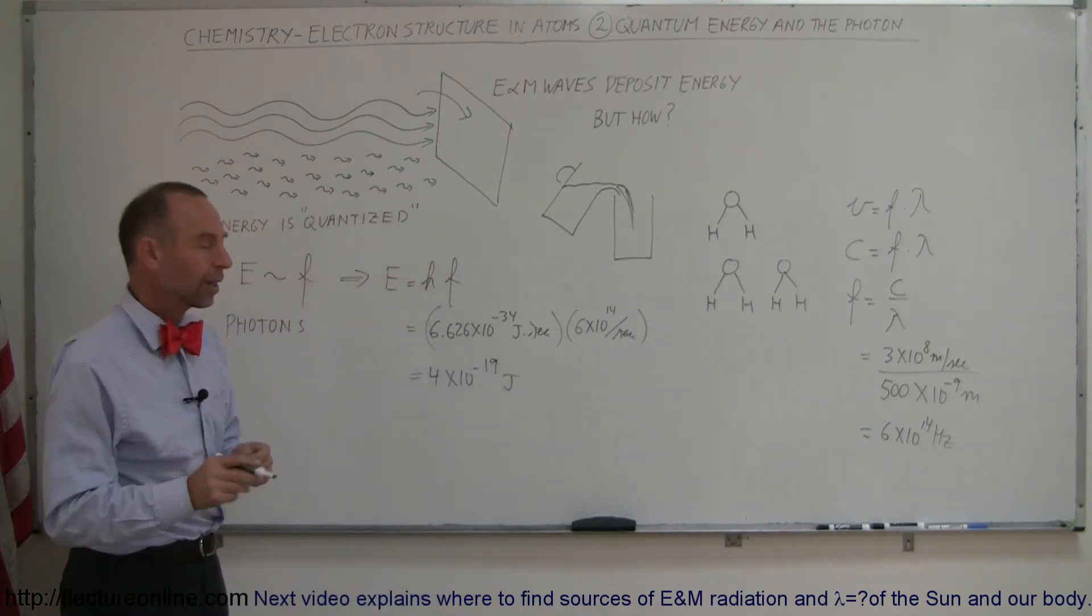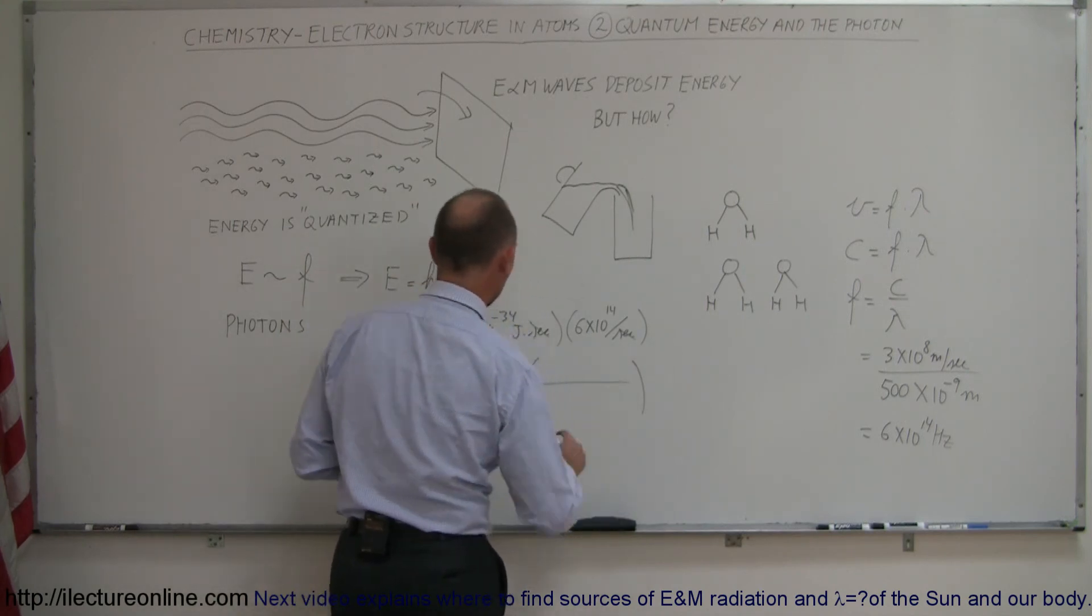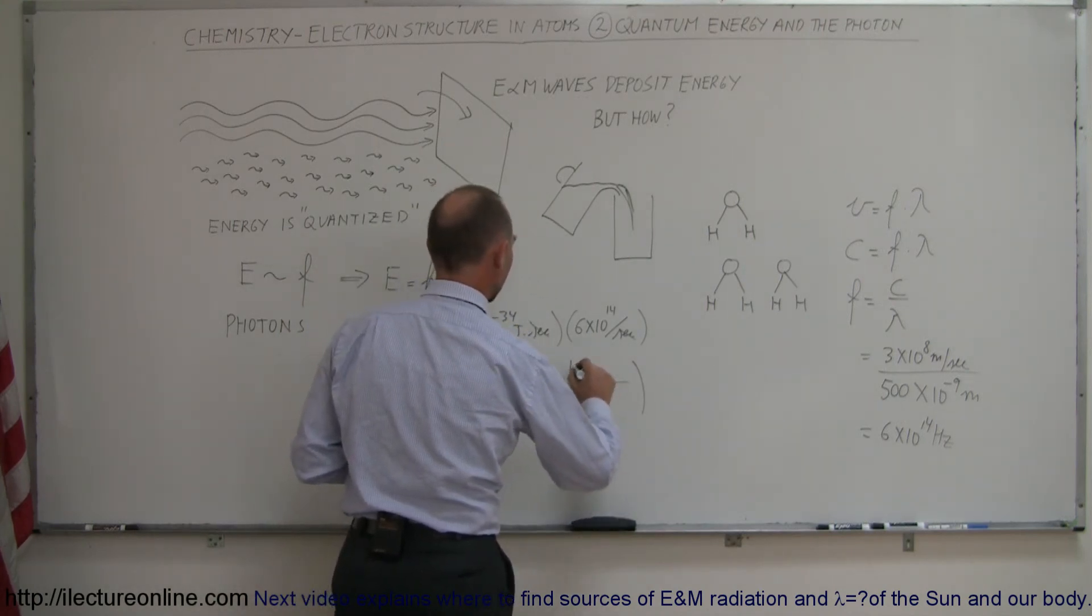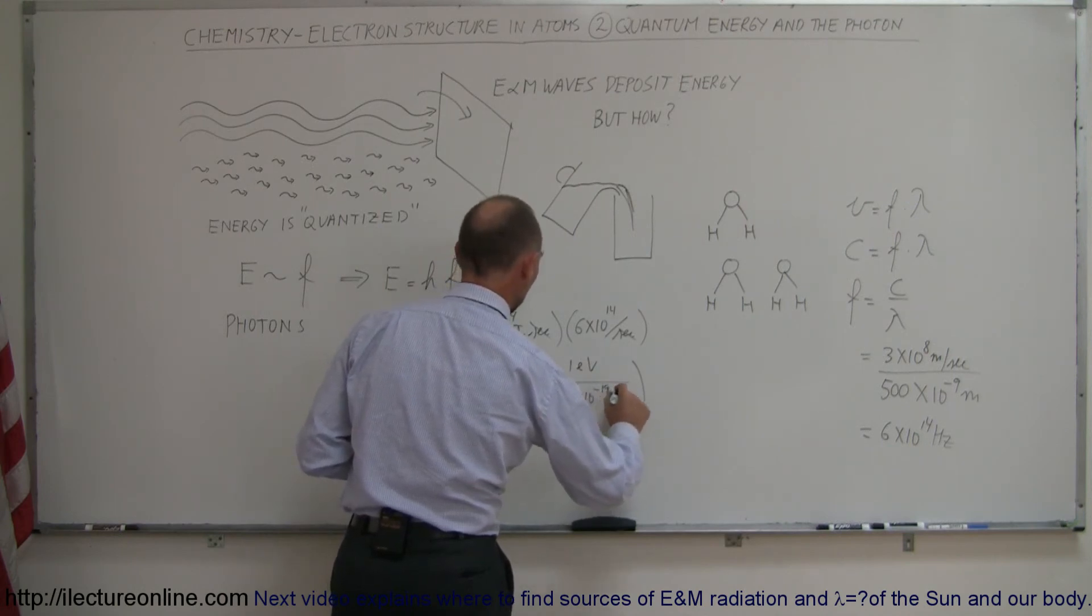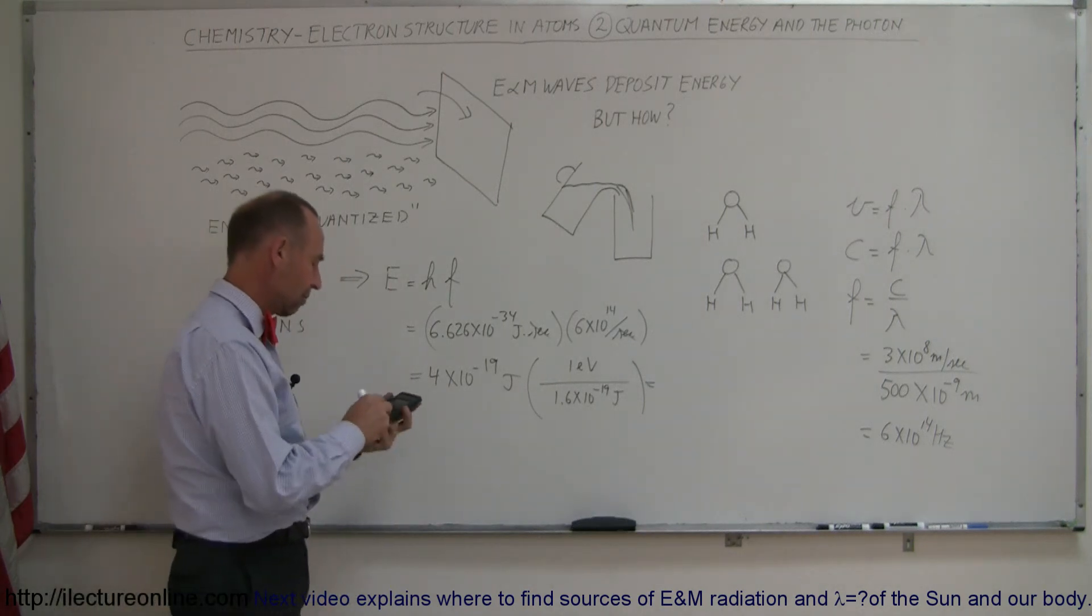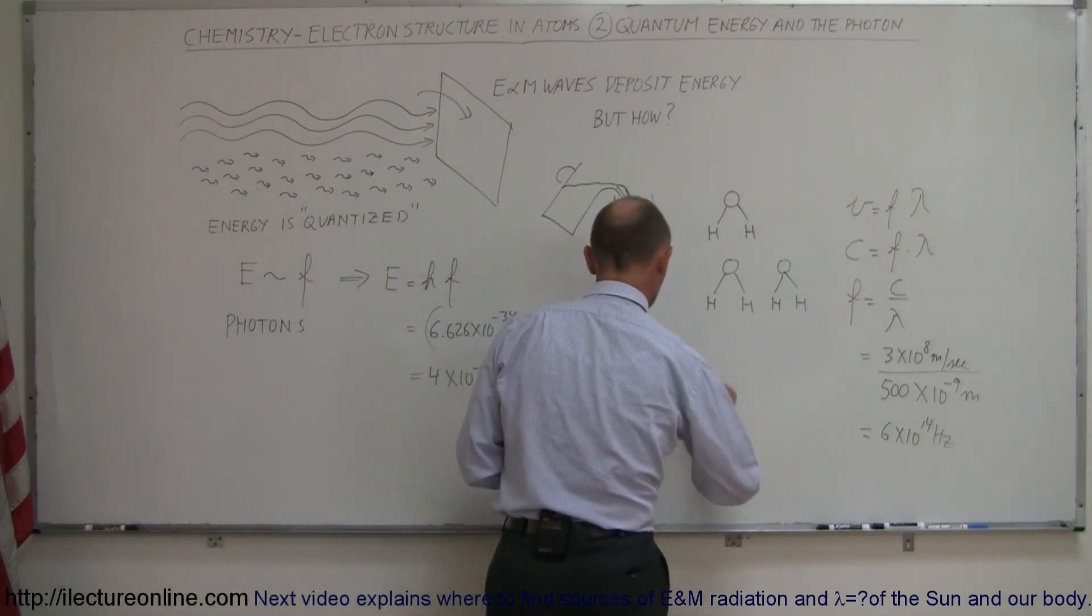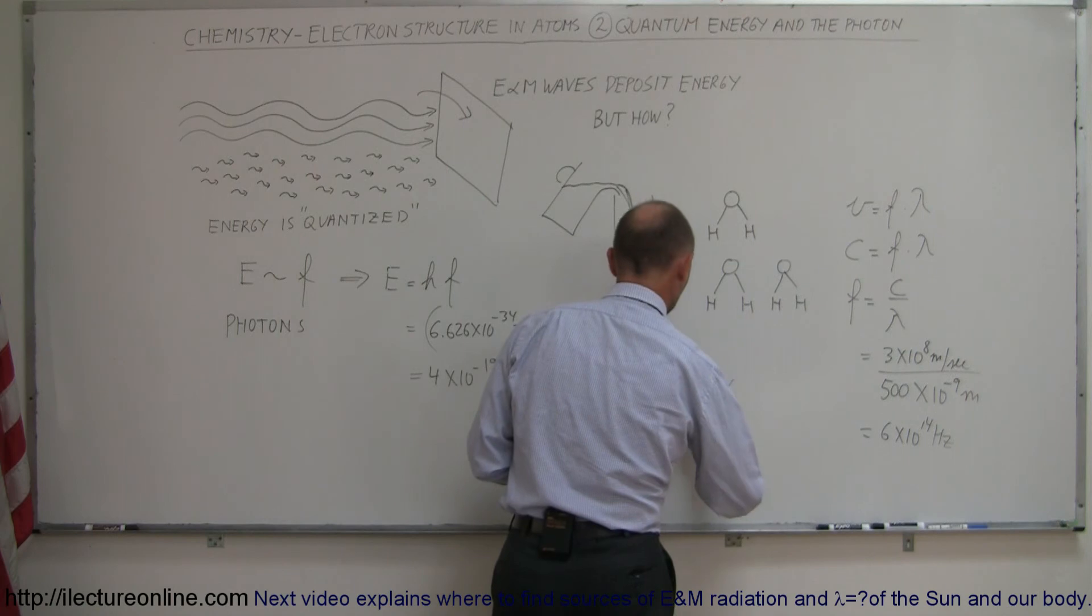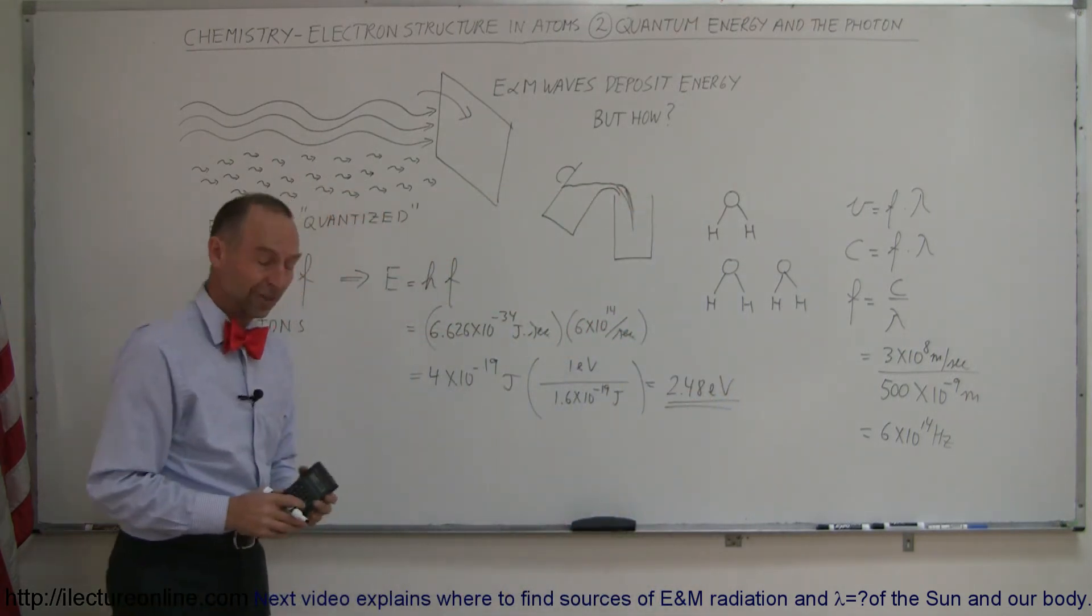Now sometimes we also convert that to electron volts. Without going into the details where the electron volt is, turns out that 1 electron volt is equal to 1.6 times 10 to the minus 19 joules. So we can also convert that from joules to electron volts by dividing by 1.6e-19 equals, and we get 2.48 electron volts. So you can see that it's easier to work with those numbers than to work with these big numbers.